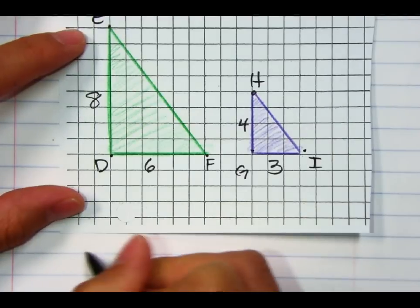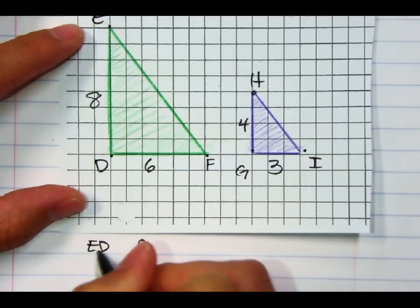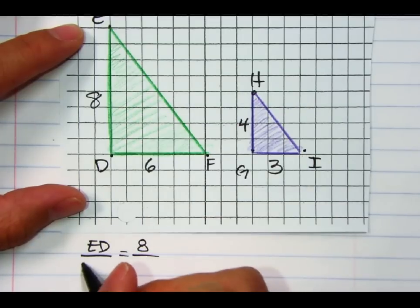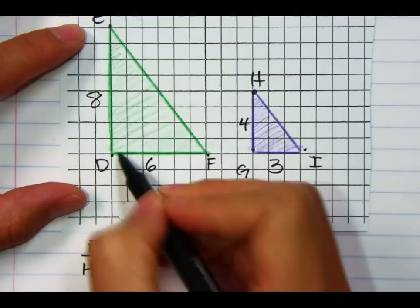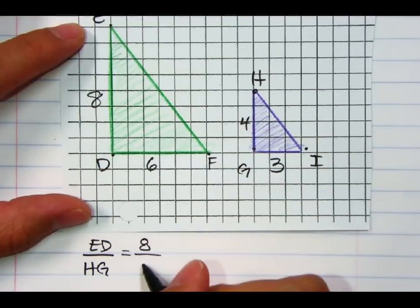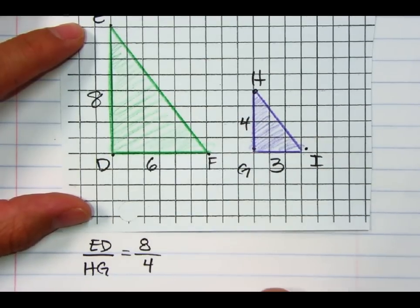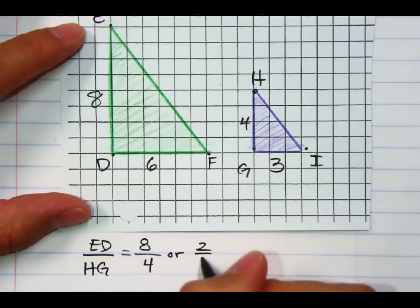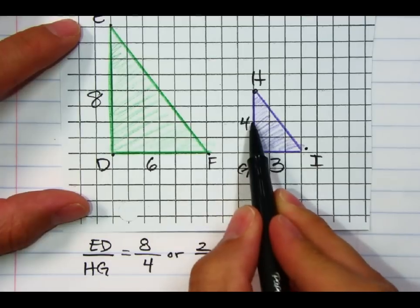Okay, so I'm going to compare E to D, okay, which is 8 in this case. And I'm going to compare that to H to G, okay, so the longest leg here compared to this longest leg is those two numbers. Okay, so which equates to 2 over 1. All right, so this is double as big as that one.